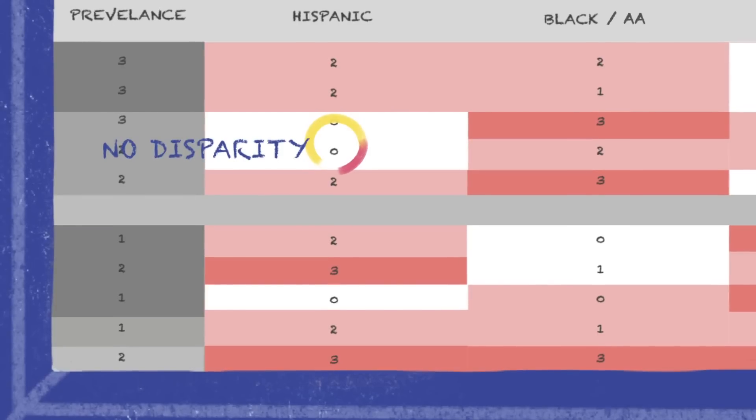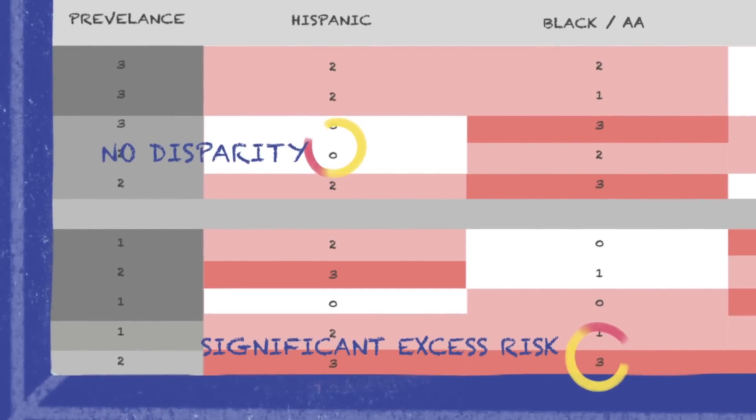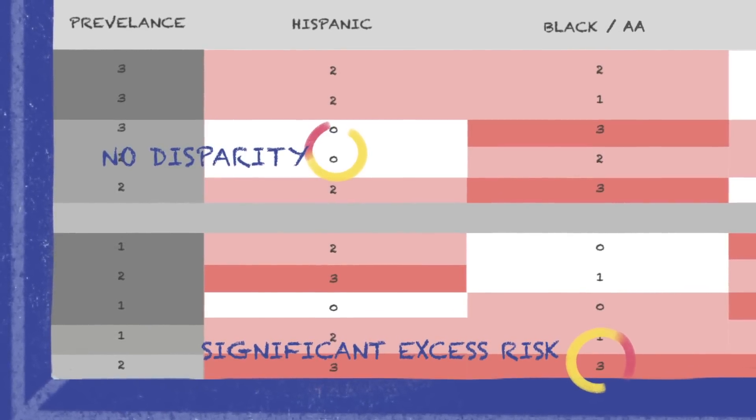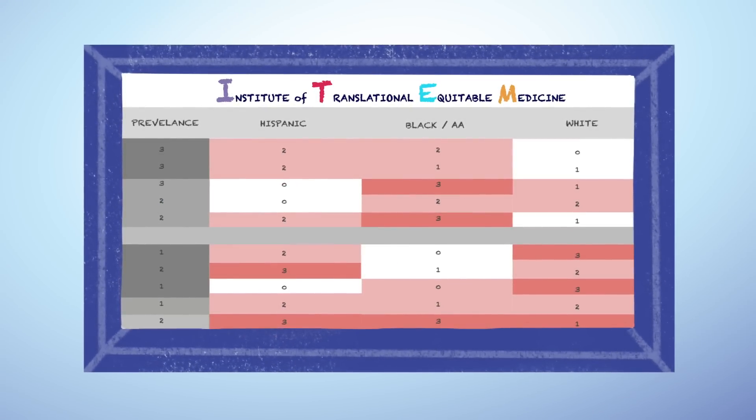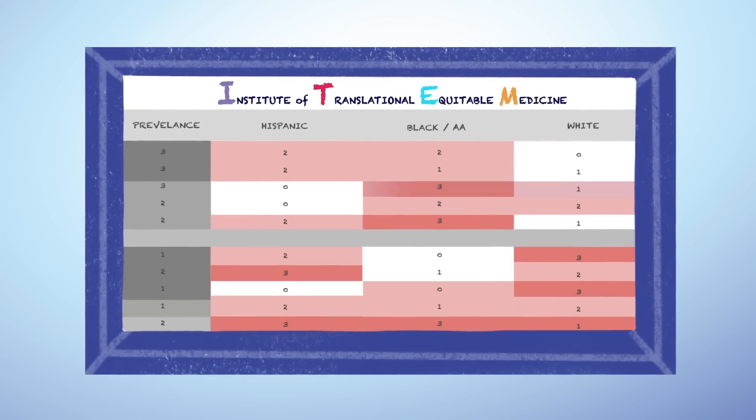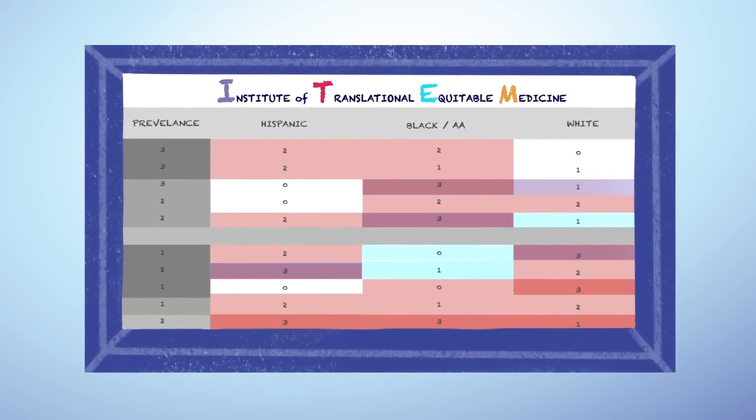With a score of 0 meaning there is no disparity in outcome, something that rarely happens, and a score of 3 representing a significant excess risk and worse outcomes for underrepresented minority populations, we have been able to highlight specific gaps in disparity as they relate to particular disease states.